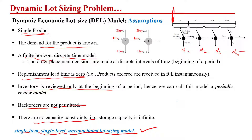There are different variations of this problem — for example, multiple items, capacity restrictions, or allowing back orders. But right now we are talking about the basic dynamic lot sizing problem. In the upcoming video lecture, we are going to discuss what kinds of methods or algorithms we can use to solve this problem. Thank you and see you in the next video.